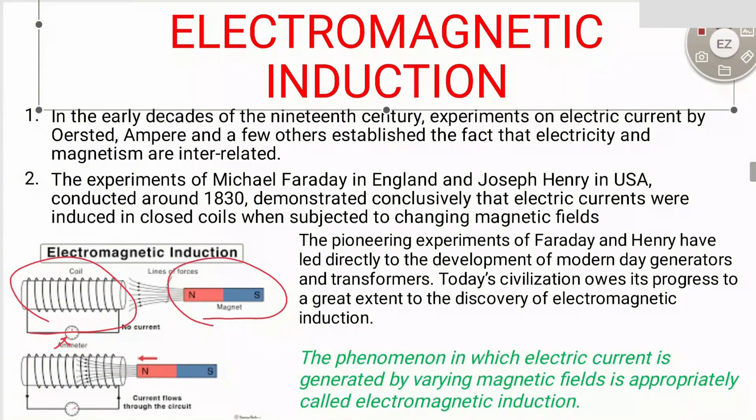When the magnet is moved towards the coil, the deflection is in one direction, and when the magnet is moved away from the coil, the deflection is in the other direction.